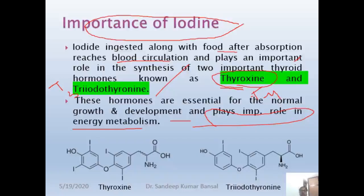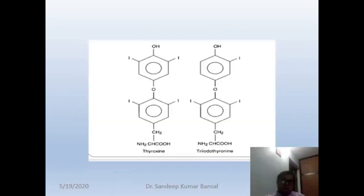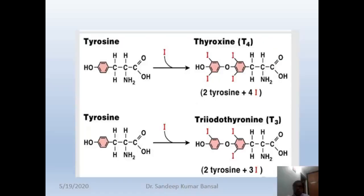If we look at the structure, in thyroxine there are four iodine atoms, and in triiodothyronine there are three iodine atoms. Here are the enlarged structures of T4 and T3. Biochemically, both of them are synthesized from the tyrosine amino acid.